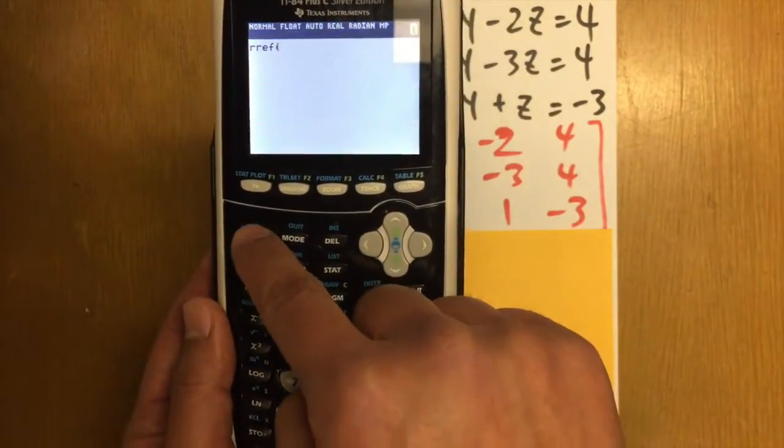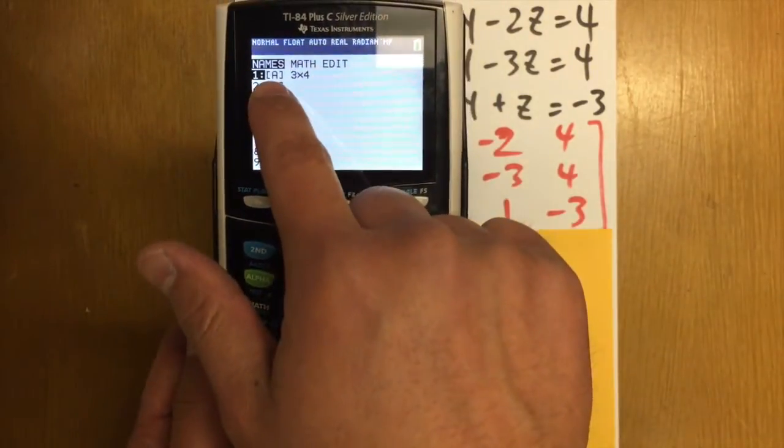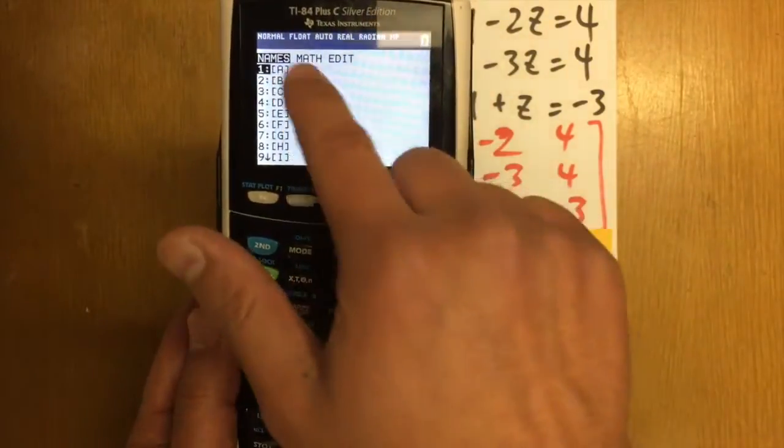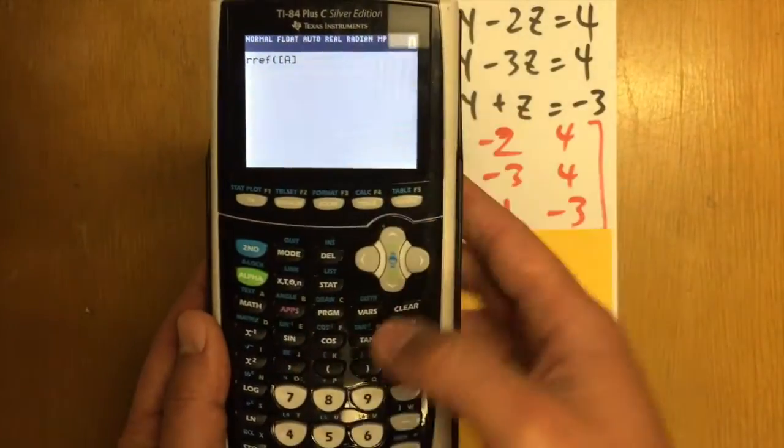So, go back to second matrix again. Right here. This time, we are going to select the first one, which is the matrix A, the 3x4 matrix that we entered earlier. And then, we are going to close the parentheses.